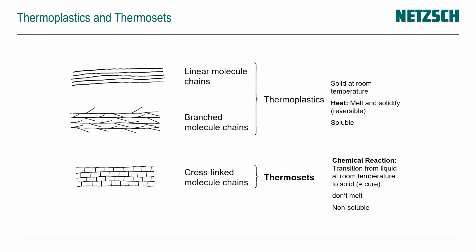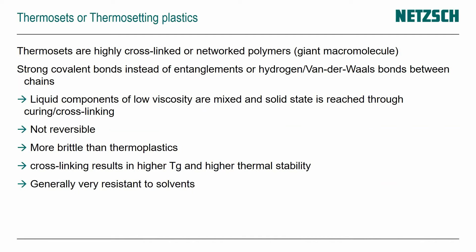And you've seen that schematic already before, but now we're focusing on the thermosets, these cross-linked molecule chains that have covalent bonds between those elongated polymer chains. And because thermosets are highly cross-linked and networked polymers, so giant macromolecules, it's not macromolecules plural. It's actually one giant macromolecule.